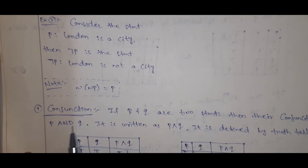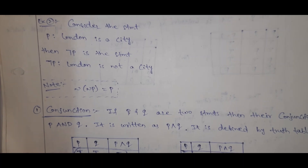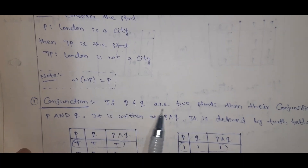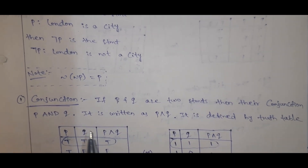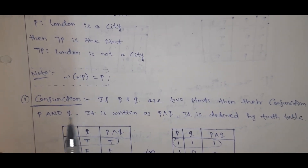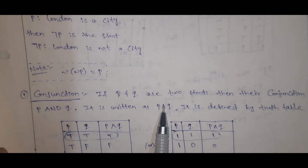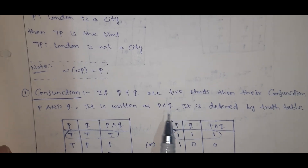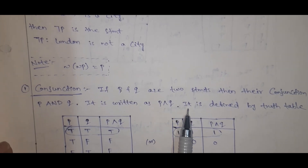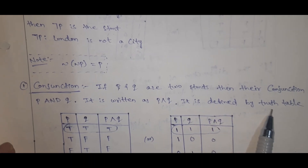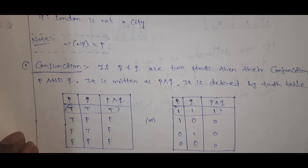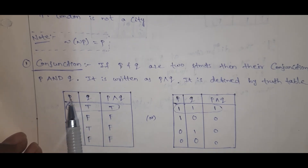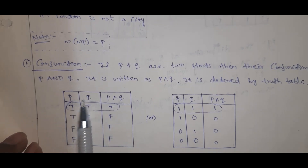Next, the AND symbol is conjunction. If P and Q are two statements, then their conjunction is P AND Q. It is written using the ∧ symbol.